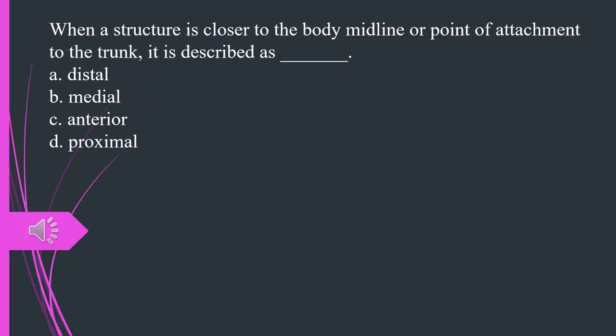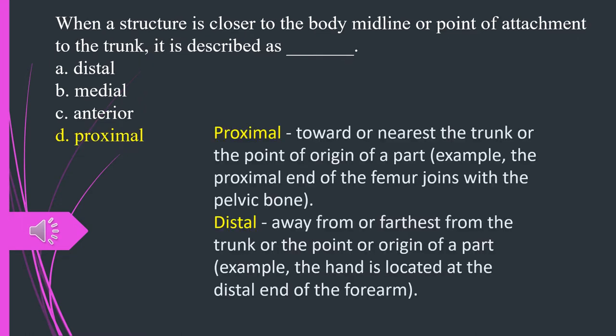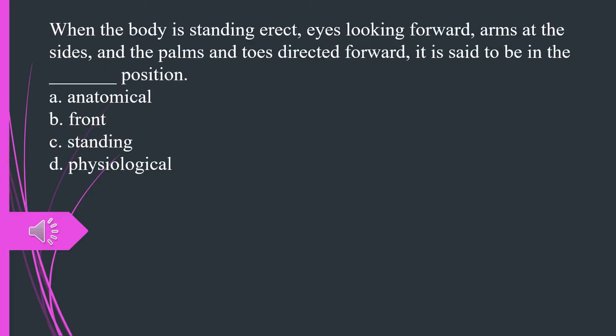When a structure is closer to the body midline or point of attachment to the trunk, it is described as what? A. Distal. B. Medial. C. Anterior. D. Proximal. The answer is D. Proximal. Proximal. Toward or nearest the trunk or the point of origin of a part, example, the proximal end of the femur joins with the pelvic bone.